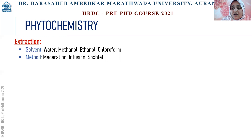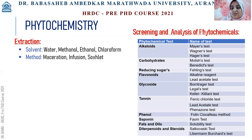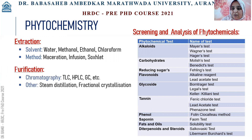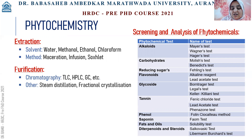After extraction, the phytochemicals are tested in that sample — that is phytochemical screening — which can be done by different methods, like testing of alkaloids by Hager's method and testing of phenols by the Folin-Ciocalteu method. Once the phytochemicals are screened, purification of a specific metabolite can be done by chromatographic methods like TLC, HPLC, or GC, or non-chromatographic methods like steam distillation and fractional crystallization.